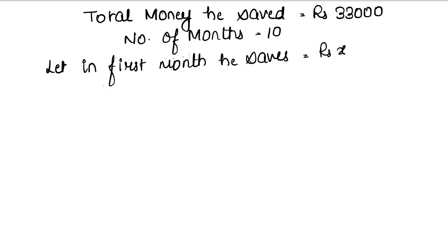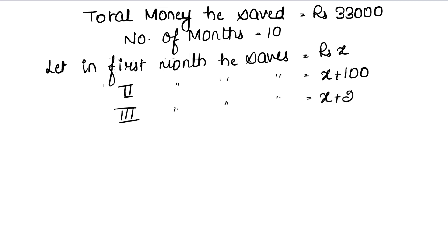So in the next month he saves 100 rupees extra, meaning the second month he saves x plus 100, and the third month x plus 200. This gives us our AP: x, x+100, x+200, up to 10 months, so the 10th month he saves x plus 900.